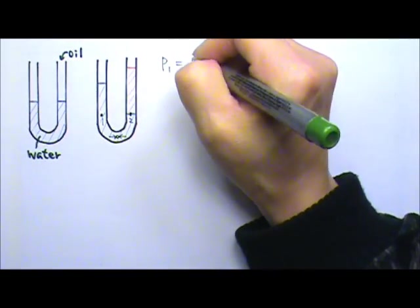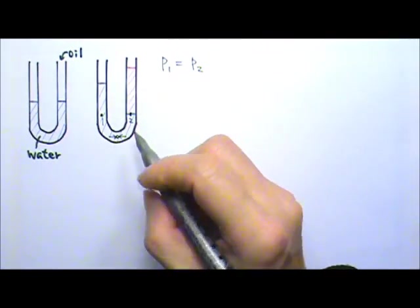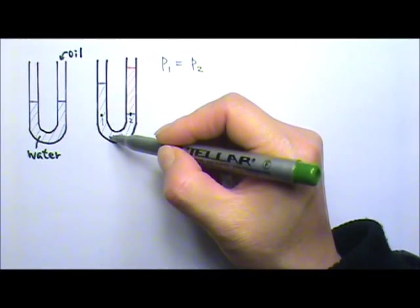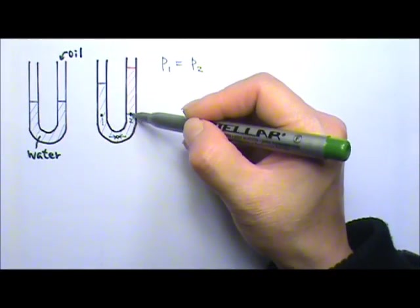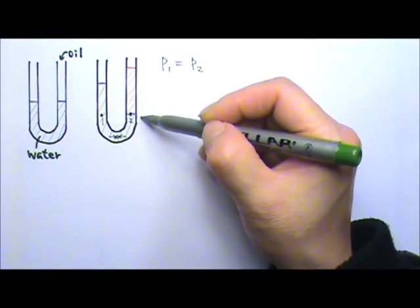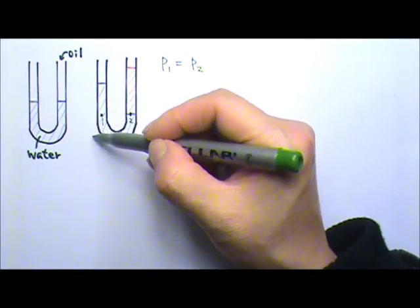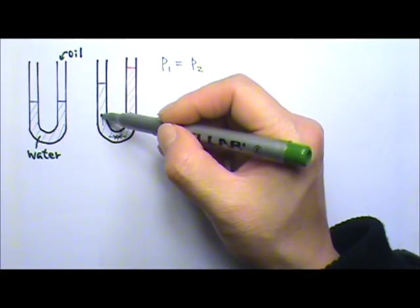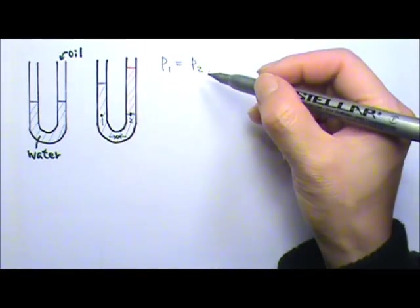Because if the pressure on these two sides are equal and I go up by the same height water column, the pressure will reduce by the same amount of ρgh of this column of water. So pressure P1 and P2 must be the same.